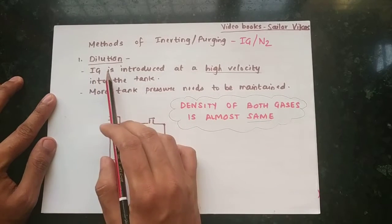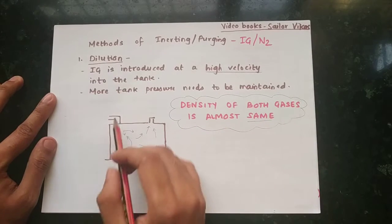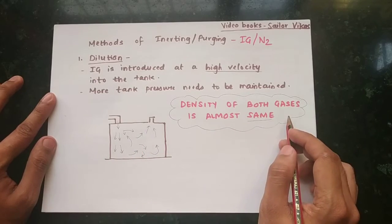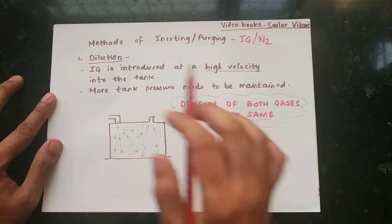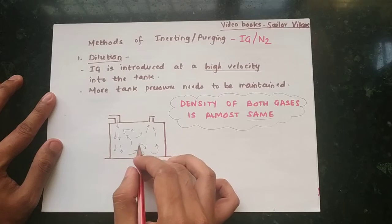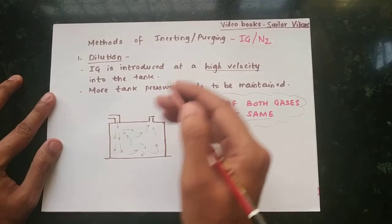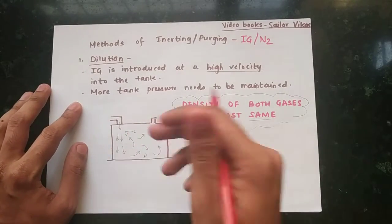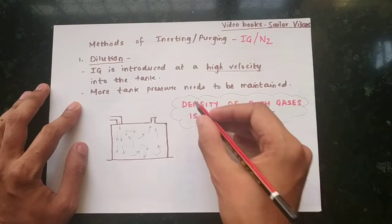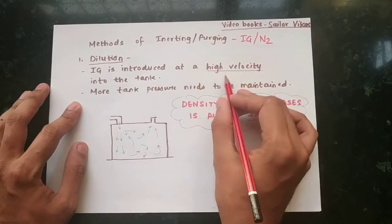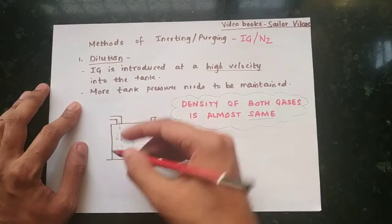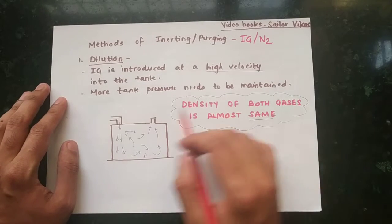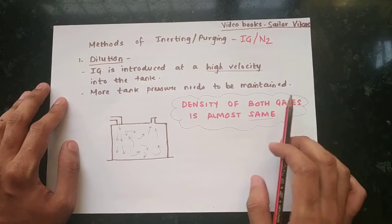The dilution method is carried out when the density of both gases is almost the same — that is, the inlet gas (IG) and the vapors present inside the cargo tank. When the densities are the same, we use the dilution method. Since the densities are equal, introducing IG at a low velocity won't produce a good change of atmosphere, so we must put the IG or nitrogen at a high velocity so it can penetrate through the HC vapors, go down, and carry out a change of atmosphere.